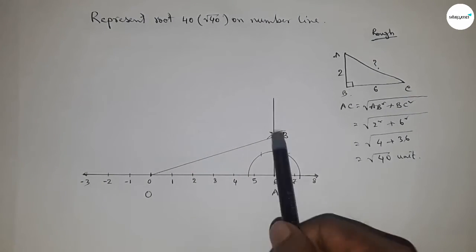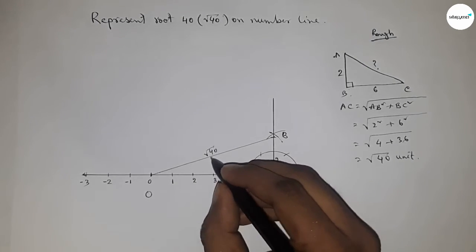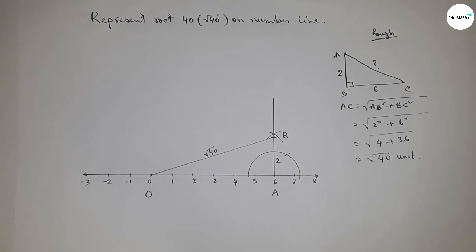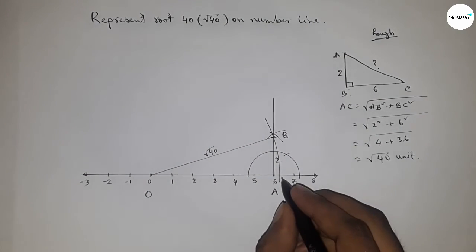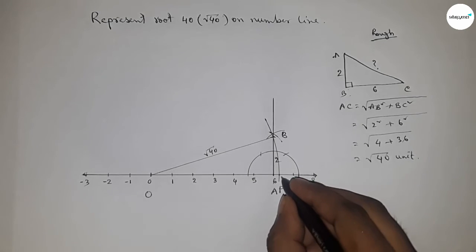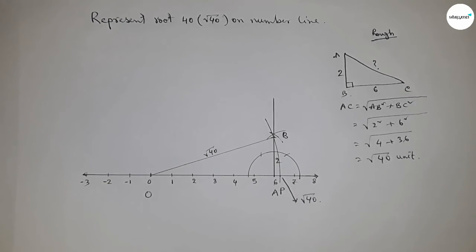From this we can say that this is √40 units. Now taking the length OB by compass and drawing an arc which meets the number line at a point. And this is the representation of √40 on number line.